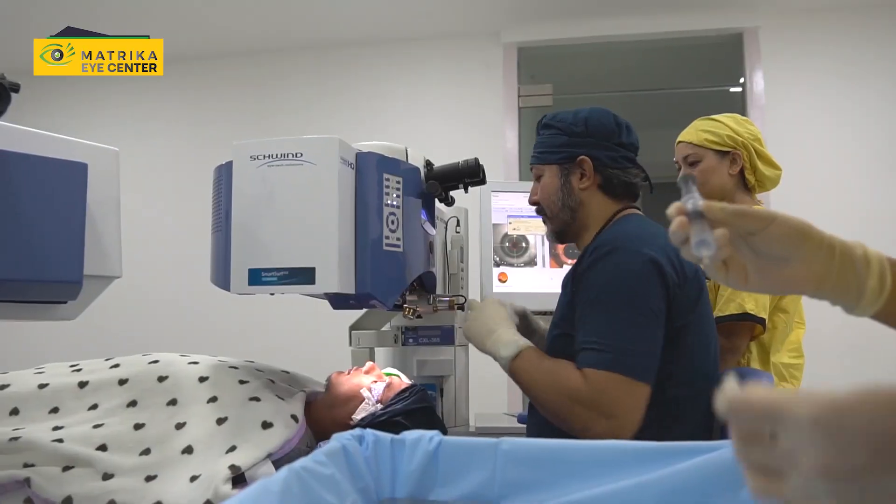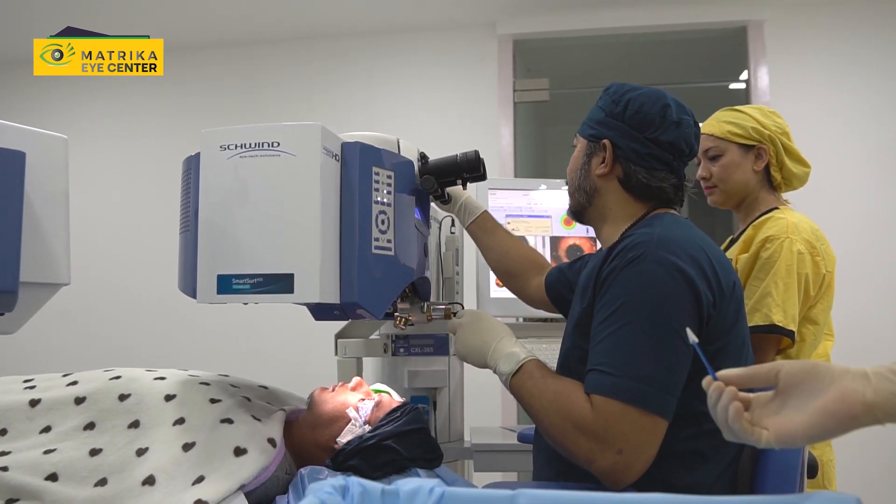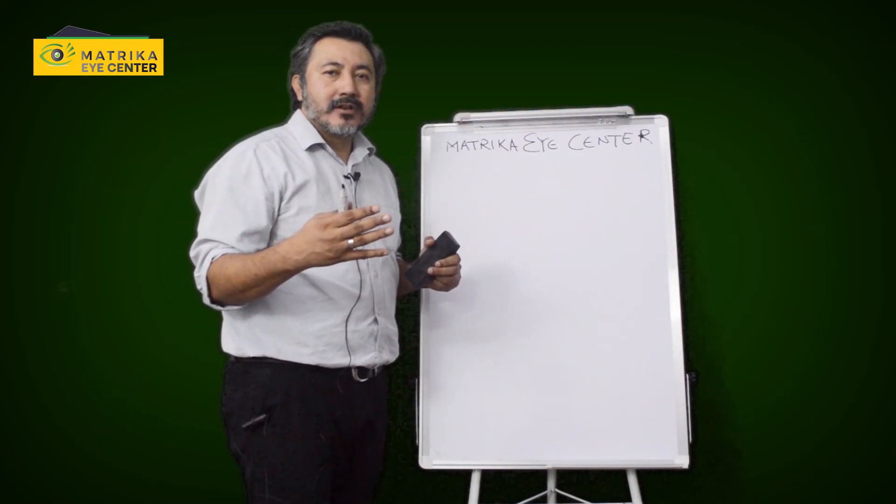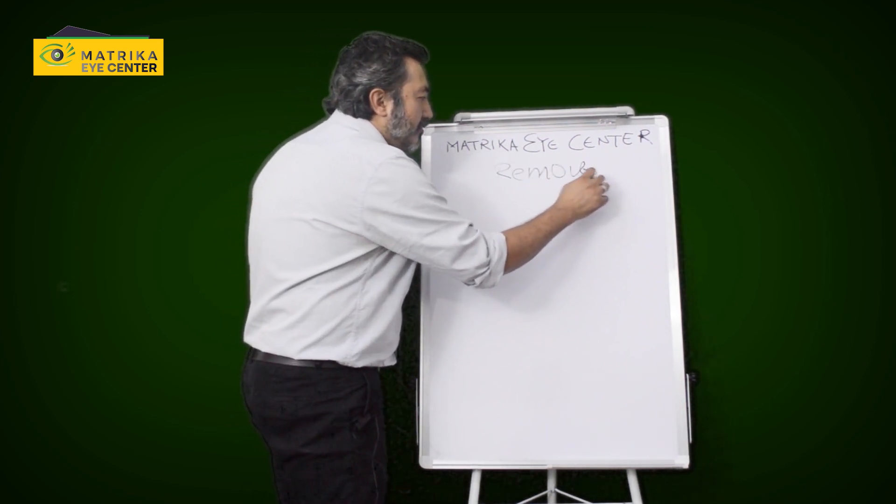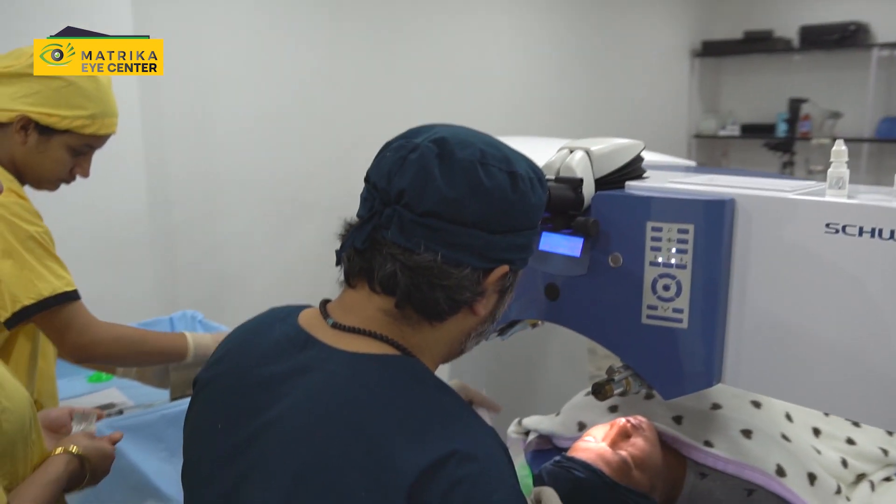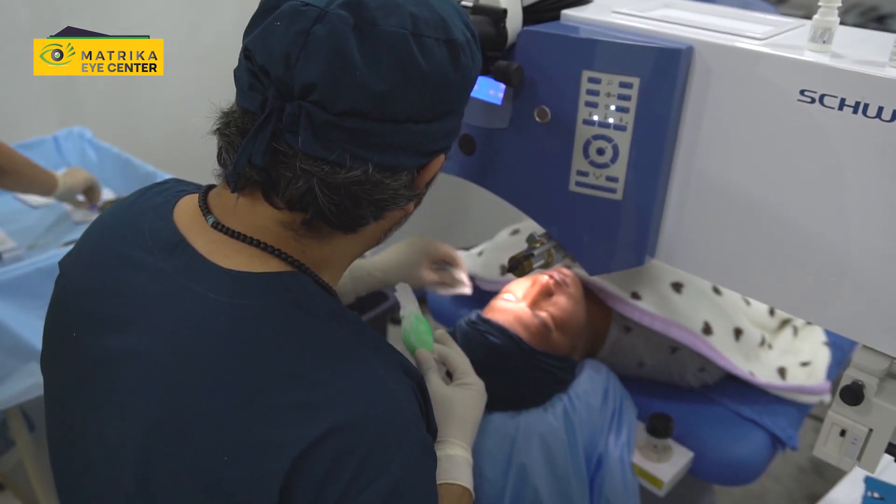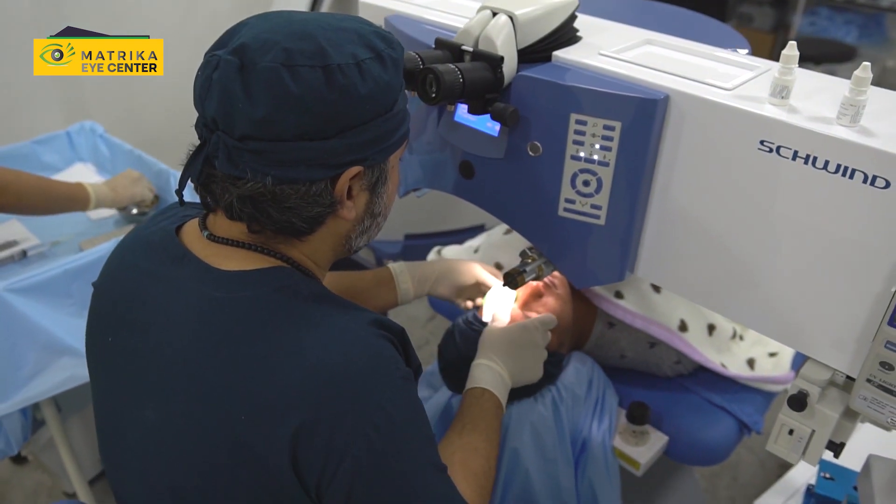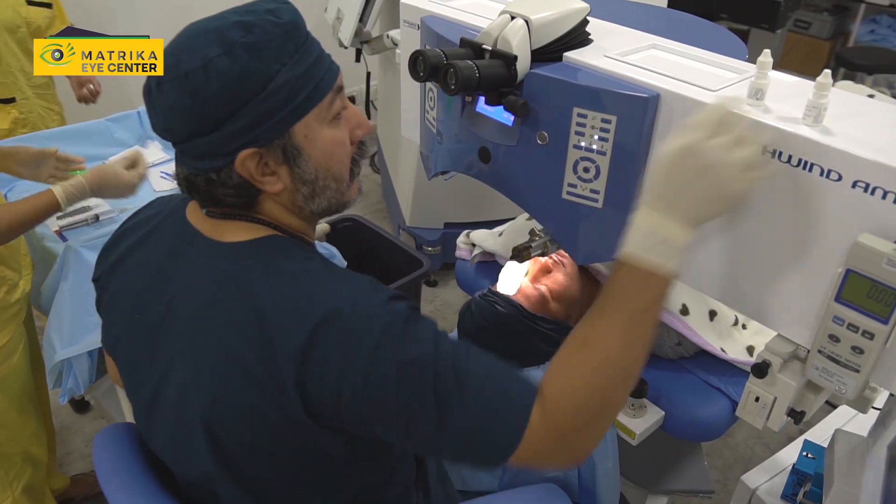So if you ask me, where is the laser done? Why is it done? The laser is done to remove your glasses. To remove your glasses permanently, you need lasers. And where do we do them? The lasers are usually done on the cornea.